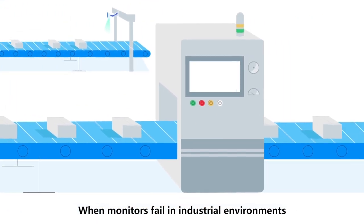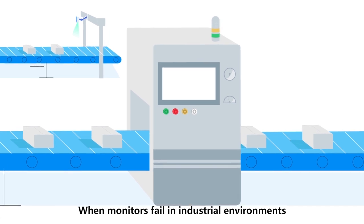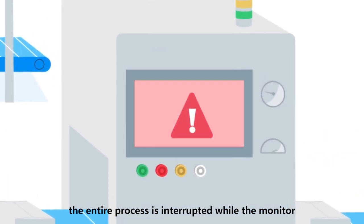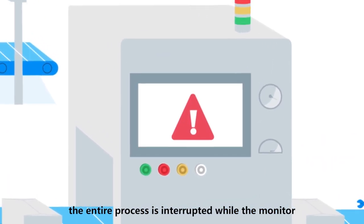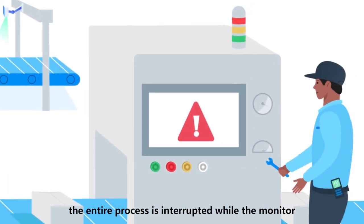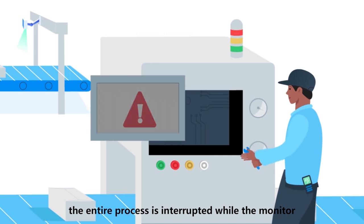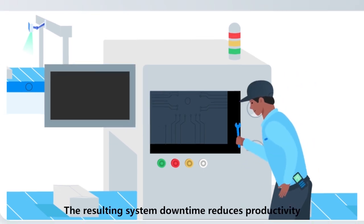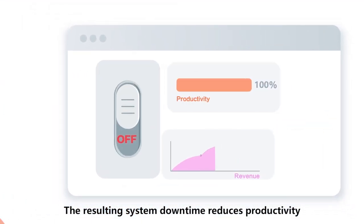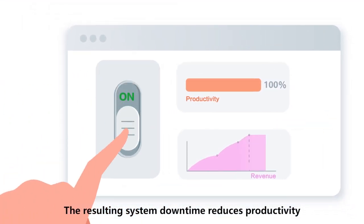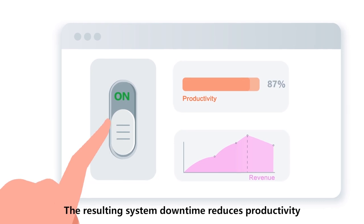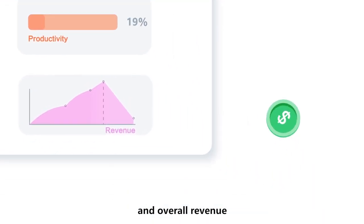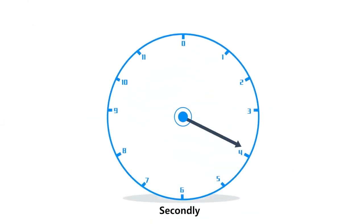When monitors fail in industrial environments, the entire process is interrupted while the monitor is replaced or repaired. The resulting system downtime reduces productivity and overall revenue.